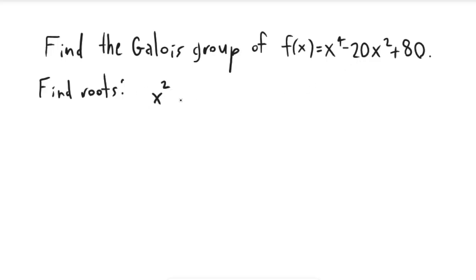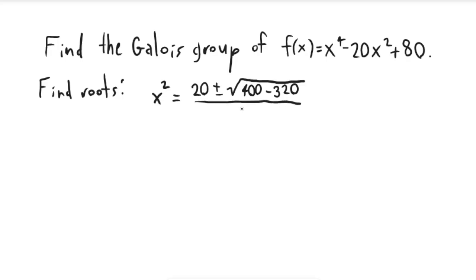you can determine the value of x squared using the quadratic formula. We get x squared is equal to 20 plus or minus the square root of 400 minus 320, divided by 2. This gives us that x squared is equal to 10 plus or minus — and if you simplify this down, you get 2 times the square root of 5.